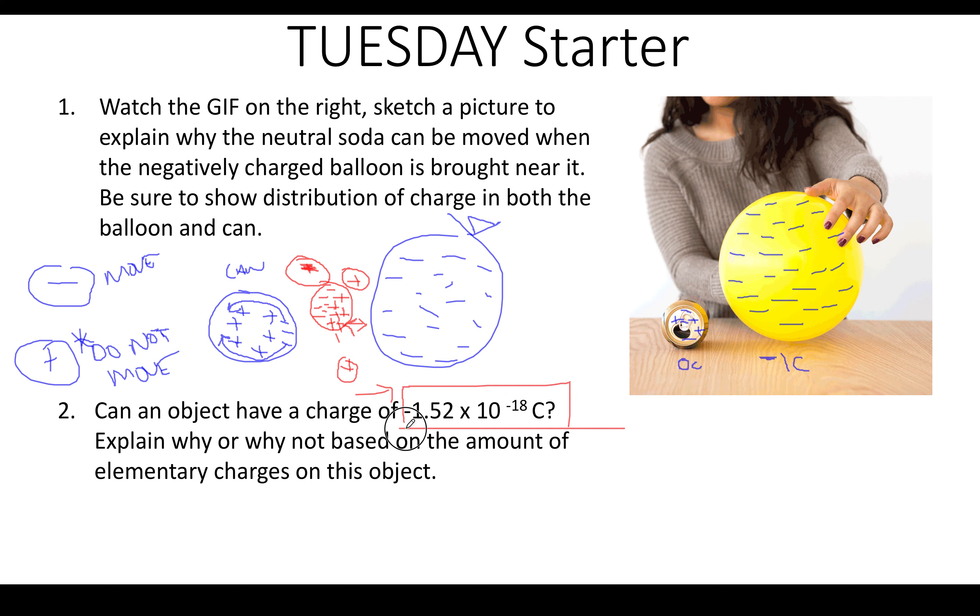Number two is talking about elementary charges and objects. Can an object have a charge of 1.52 times 10 to the negative 18th coulombs? Well, we know that one elementary charge is equal to 1.6 times 10 to the negative 19th coulombs. We cannot have any division of that charge. So if you had two elementary charges, it's double that. Three elementary charges, it's triple that. We cannot have a half of an elementary charge or half of this. It does not work.